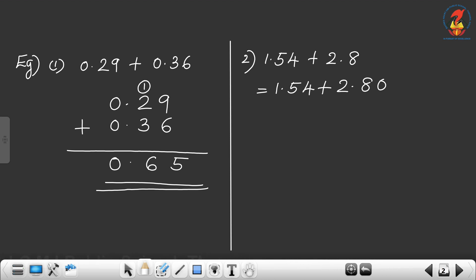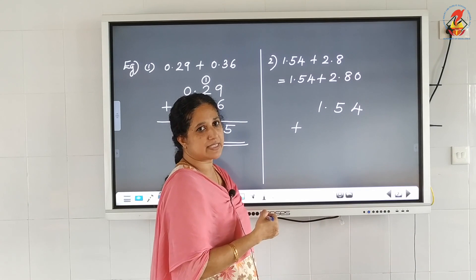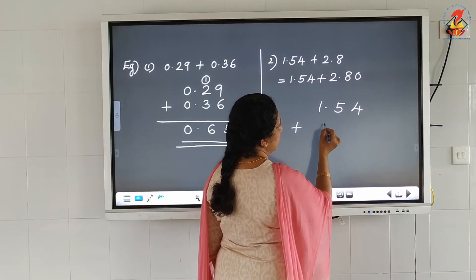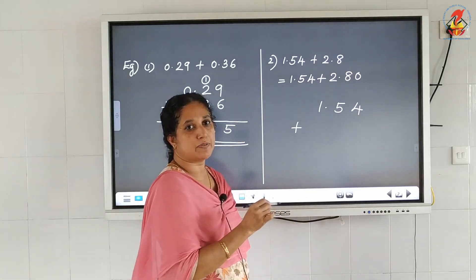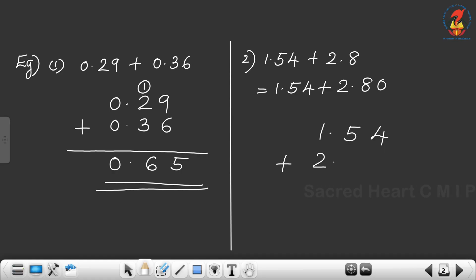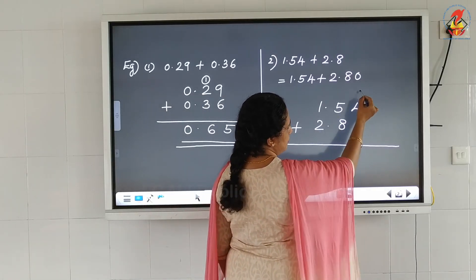Write 2.8 as 2.80. Write the first number 1.54, then just below it write the second number 2.80, so that the decimal point is directly below the decimal point of the first number. Here also we have to start from the hundredths place onwards.